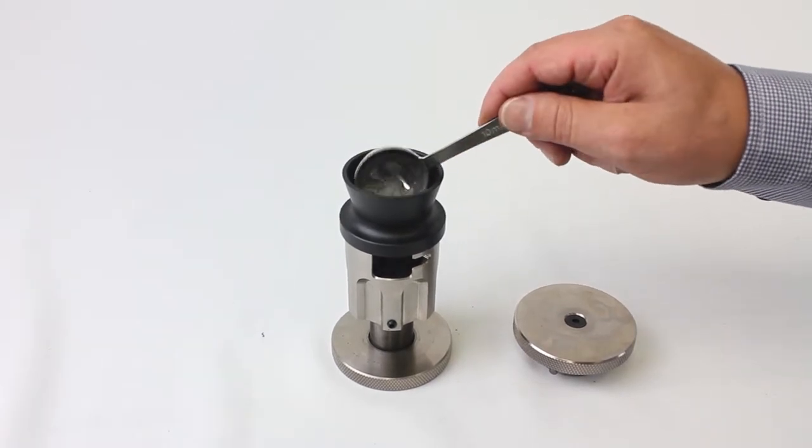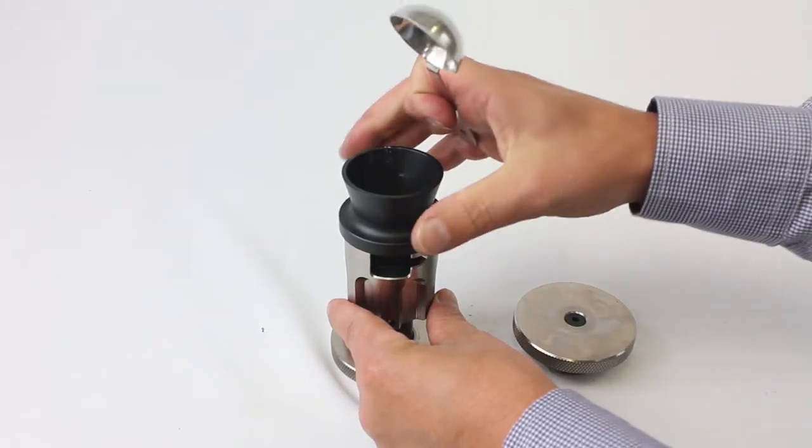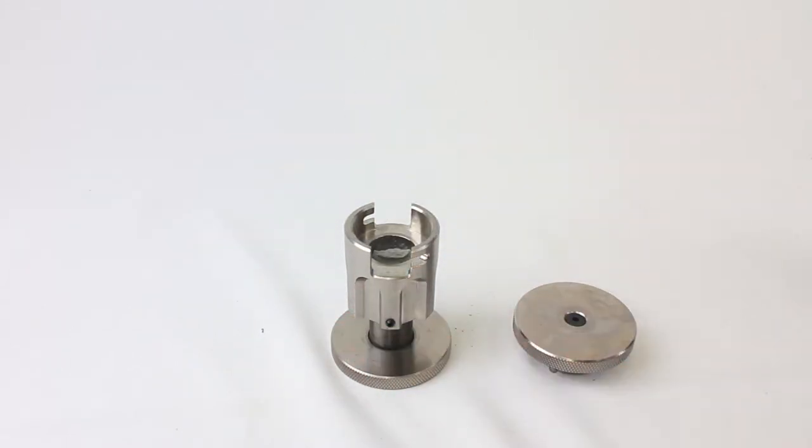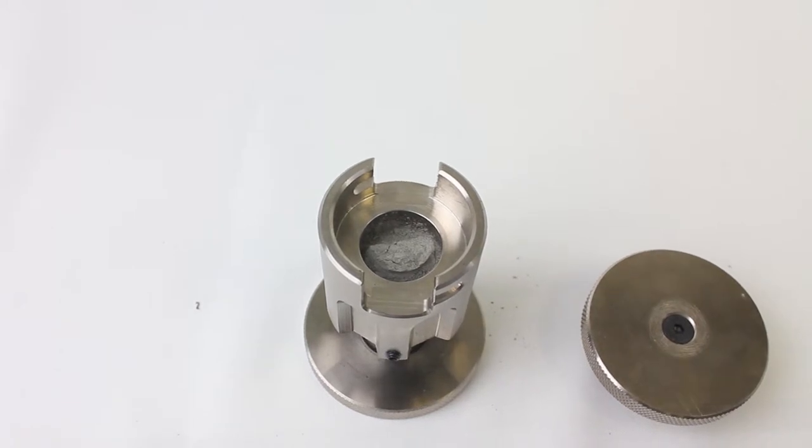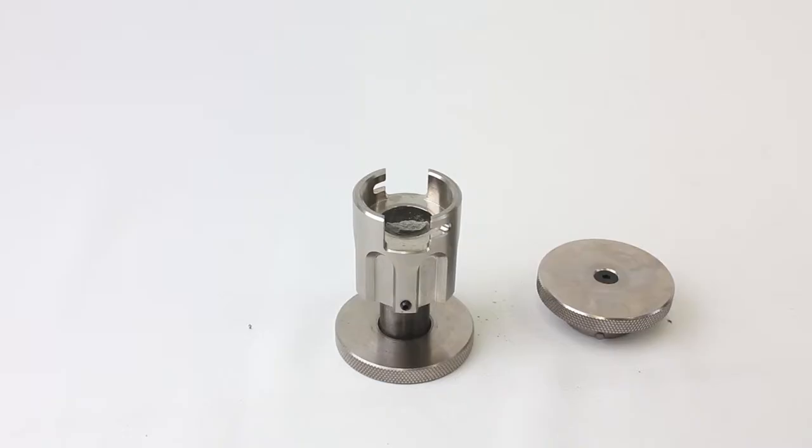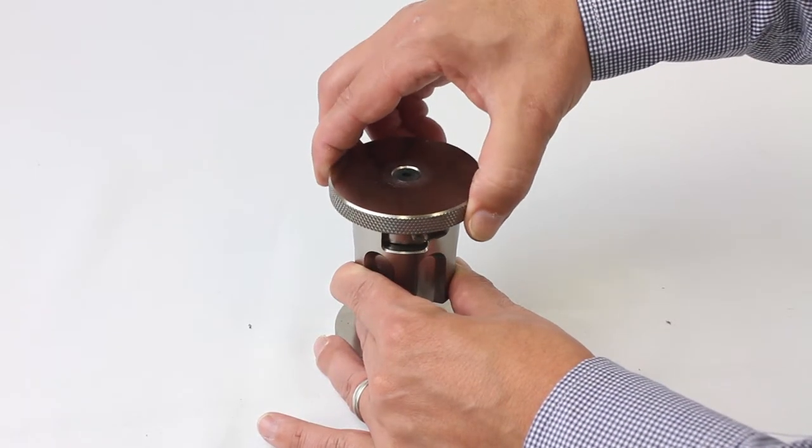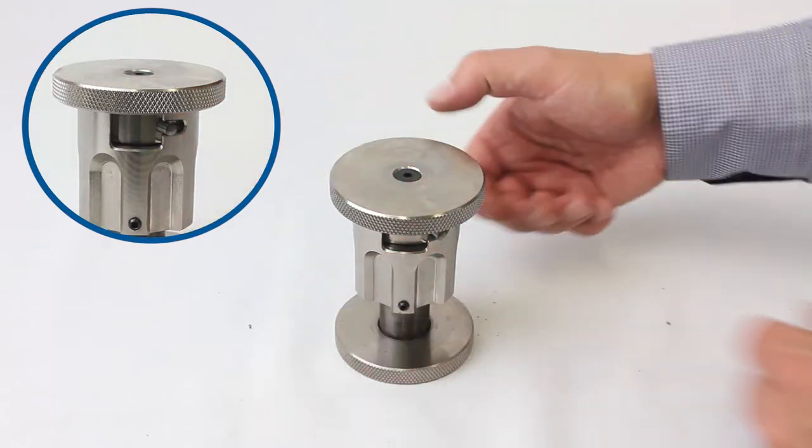A dry, fine powder will produce the best results. Introduce the sample to the funnel. If bridging occurs or the sample does not flow completely into the die, tap the funnel and/or die body lightly. When using the standard sample die, the volume is less critical because it is possible to produce pucks of varying thickness.